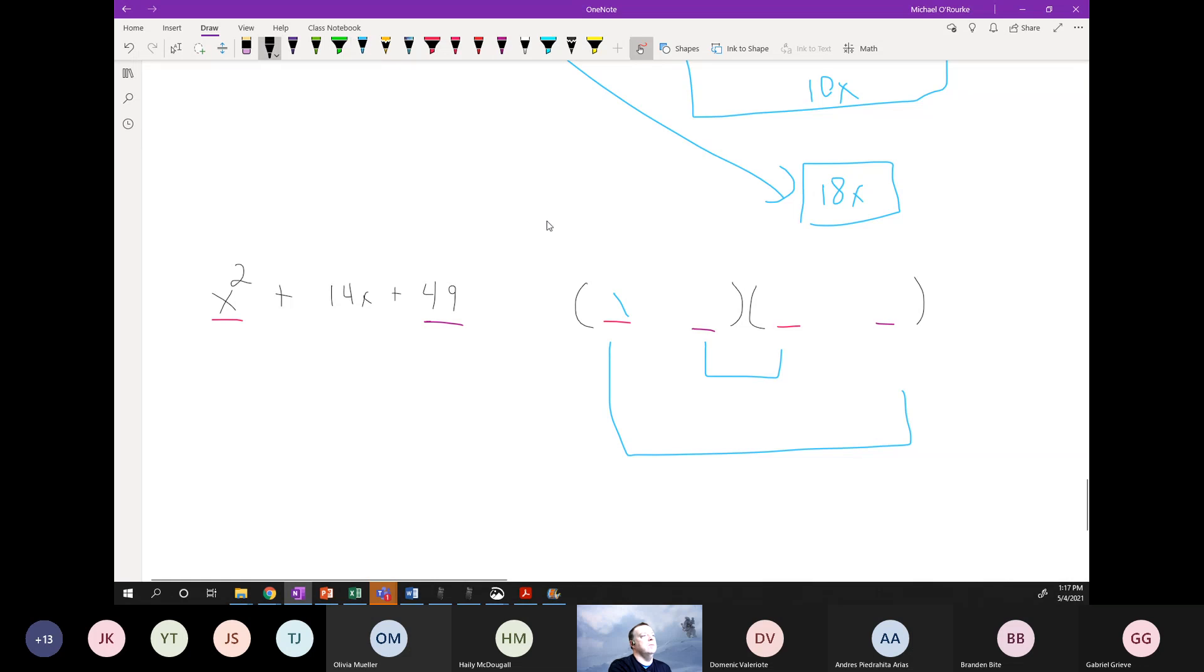Okay, Brandon got x plus seven and x plus seven. How do we feel about that? X plus seven, x plus seven. Okay, so seven times seven equals 49, perfect. X times x, x times x is x squared. And if we do our check, seven times x, seven x, seven x, which equals 14x. Perfect.